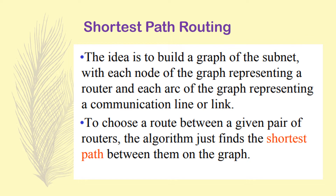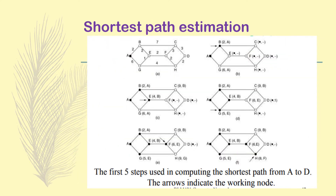Shortest path routing is an algorithm invented in the 1950s — work was carried out roughly between 1956 and 1959. It was originally based on the traveling salesman problem and is known as Dijkstra's algorithm, a well-known fundamental algorithm. The idea is to build a graph of the subnet with each node representing a router and each arc representing a communication link, then find the shortest path between a given pair of routers.